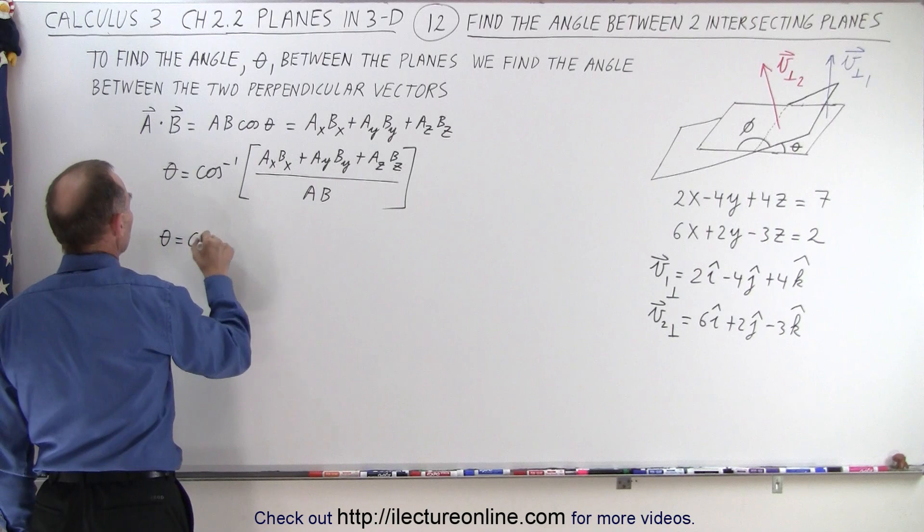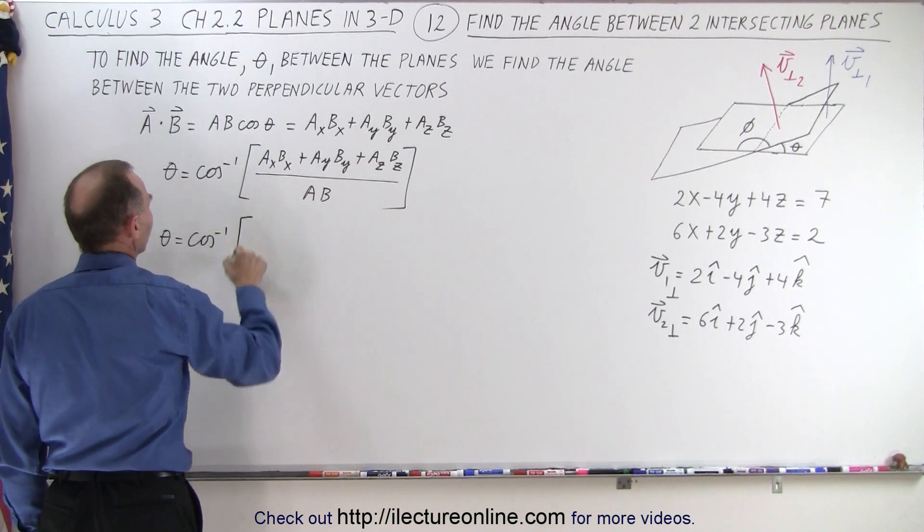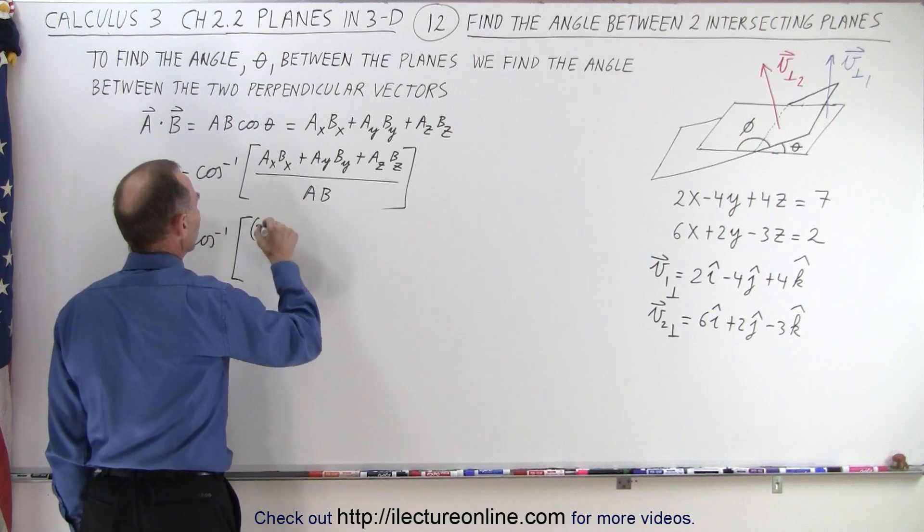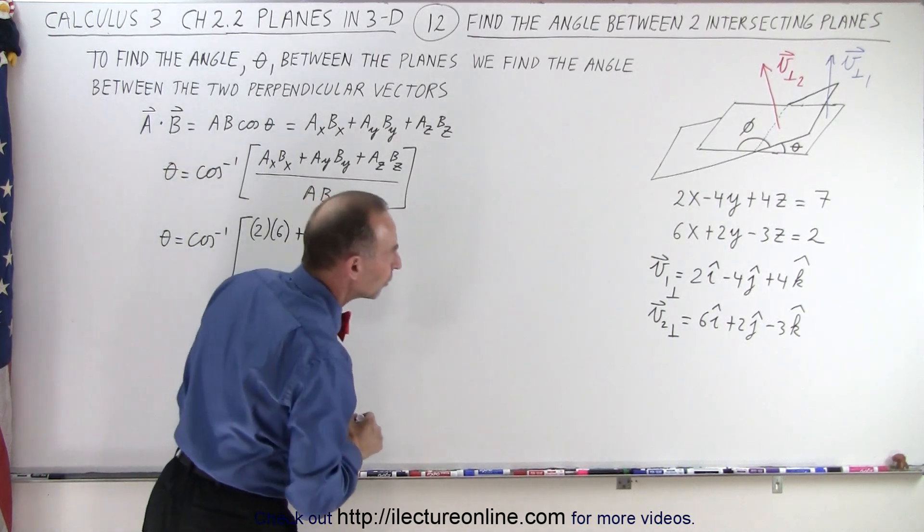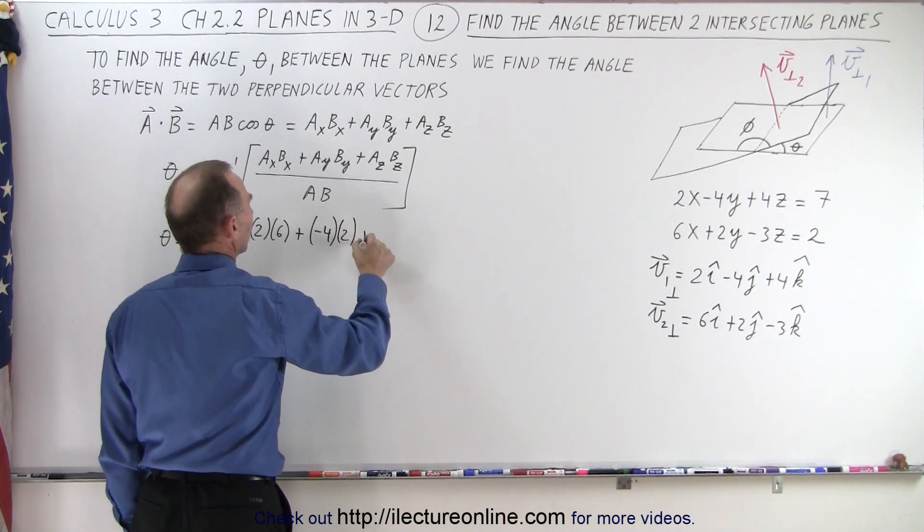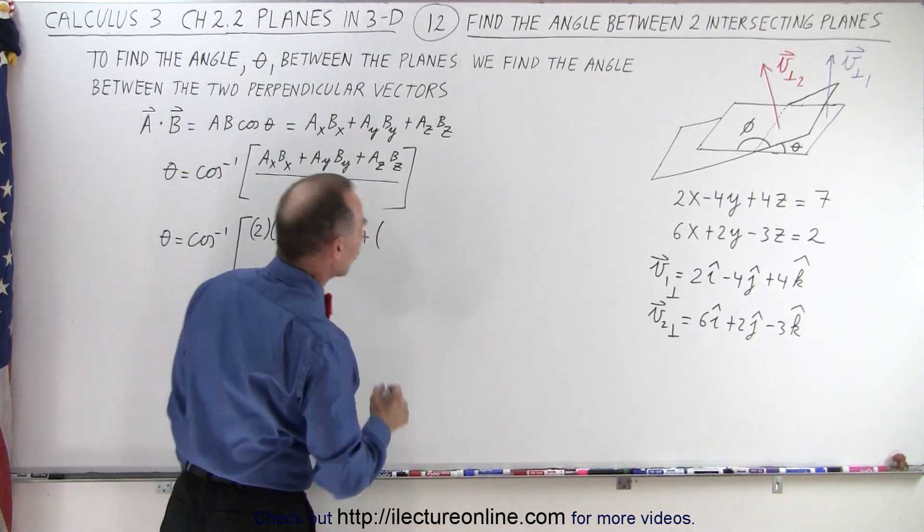Now we're going to plug that into our equation, so theta is going to be equal to the inverse cosine of the X components multiplied together, so 2 times 6, plus the Y components, negative 4 and 2, and plus the Z components, 4 and negative 3.